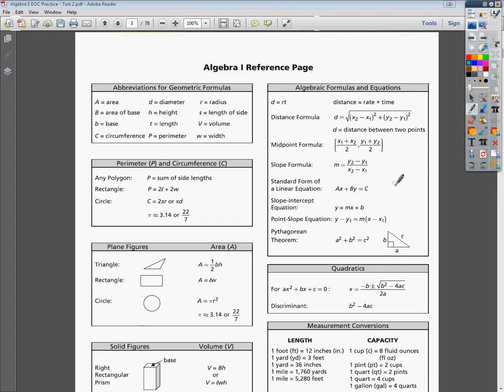So here's my midpoint formula. It says x1 plus x2 over 2, and then y1 plus y2 over 2. What they're essentially asking you to do is take the distance between the x values and average them, and then average the values on the y's.